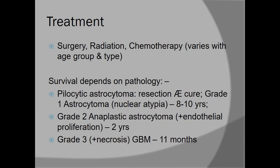Gliomas are generally treated with surgery, with the option of radiation and chemotherapy depending on the grade. Survival depends on the pathology and grade. For Pilocytic Astrocytoma (grade 1), we go for resection and with maximum treatment of surgery and radiation, survival can be 8 to 10 years. In grade 2, vascular endothelial proliferation is seen on histopathology and life expectancy is about 2 years. In grade 3 or 4 GBM, per the new WHO classification, survival is about 11 months.